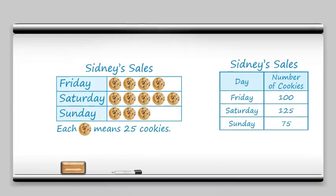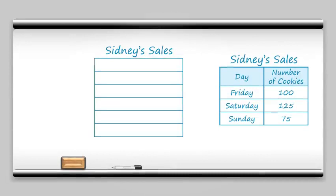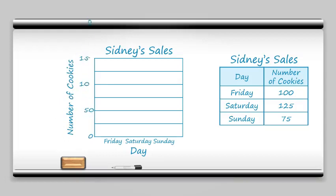Now let's take that data and make a bar graph. Same kind of thing here — we have our title and we have our graph area. Along the bottom we're going to put our categories, and along the side we're going to put the number of cookies. You can label the lines of this bar graph in ways that make sense to you. For this example, I'm going to mark the 50s and leave a spot in between — those are going to be 25s.